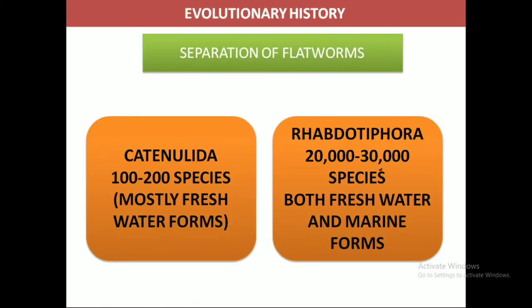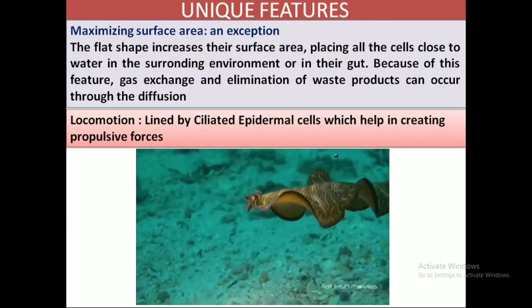As far as the evolutionary history is concerned, it is said that the flatworms got separated into two different lineages: one is the Acoelurida and the other is the Neodermatia. The Acoelurida is a small group containing only about 100 species, mostly freshwater forms, whereas the Neodermatia contains about 20,000 to 30,000 species with both freshwater and marine habitats. Among these, the free-living forms have been extensively studied in terms of physiology and anatomy — for example, the common species Planaria.